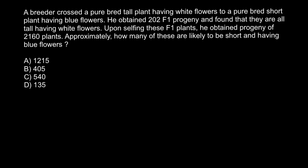So what we know: one plant is tall and has white flowers, and another is short and has blue flowers. What does purebred mean? Purebred means that alleles for the same trait are the same. So if tallness and white color are dominant traits, the genotype of this plant would be capital A capital A and capital B capital B.